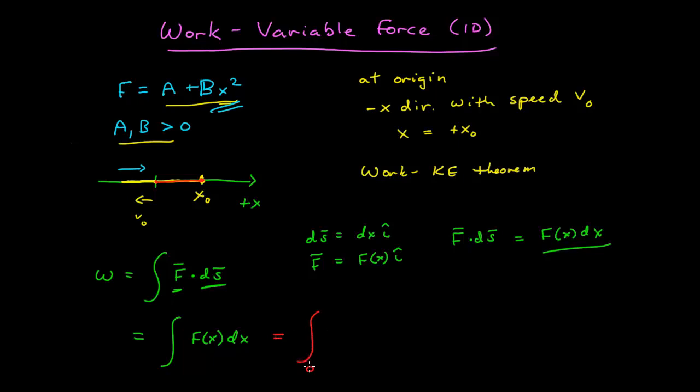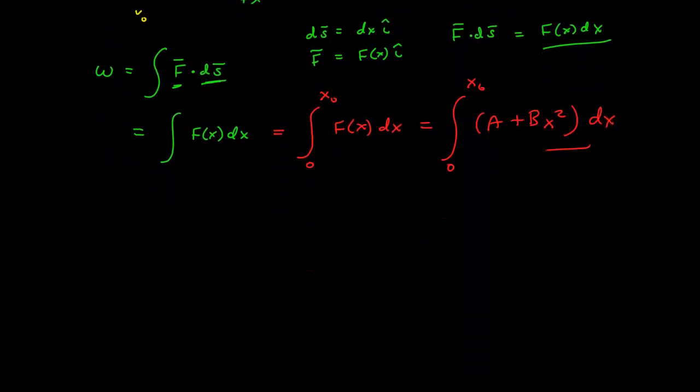And so I get the integral of 0 to x naught F(x) dx. Working through the logic of the definition of work, I've turned the problem into a simple integral of a polynomial, 0 to x naught of A plus Bx squared dx, and this is something I can do.